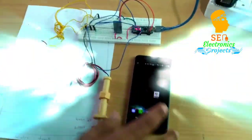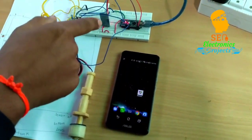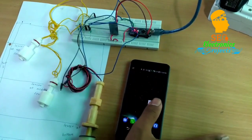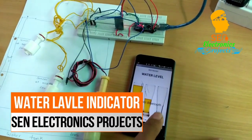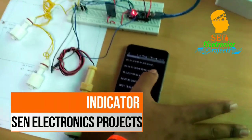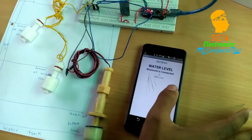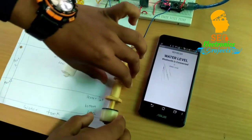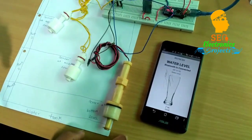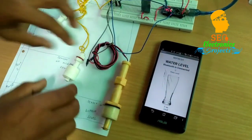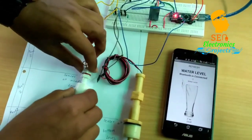This is a water level sensor. Here we use a Bluetooth module to connect with our mobile. First we open the app and connect with Bluetooth. Now we are filling the tank. Water level is low, now we have filled it to the second level.